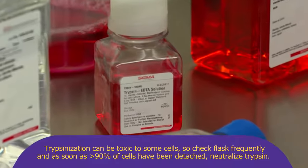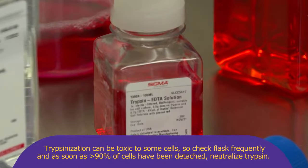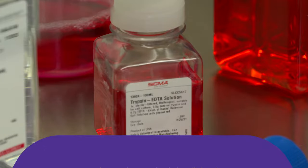Trypsinization can be toxic to some cells. So check flask frequently and as soon as greater than 90 percent of cells has been detached, neutralize trypsin. You can also tap the vessel to help cell detachment.